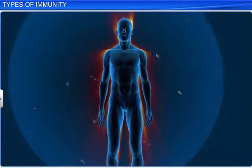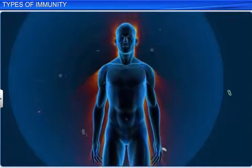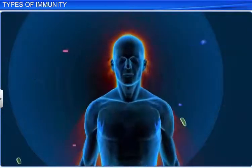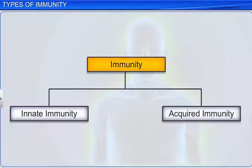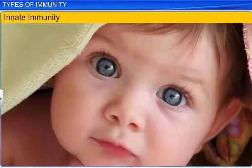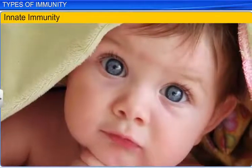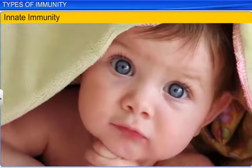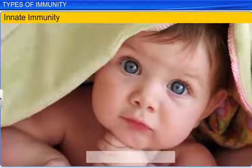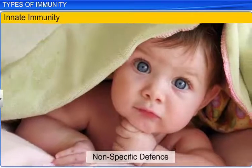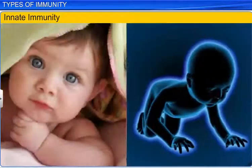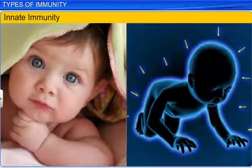Immunity is the overall ability of a host to fight the disease-causing organisms. Immunity is of two types: innate and acquired. Innate immunity is something we all possess since birth. It is a non-specific kind of defense, which provides different types of barriers to the entry of foreign agents to our body.